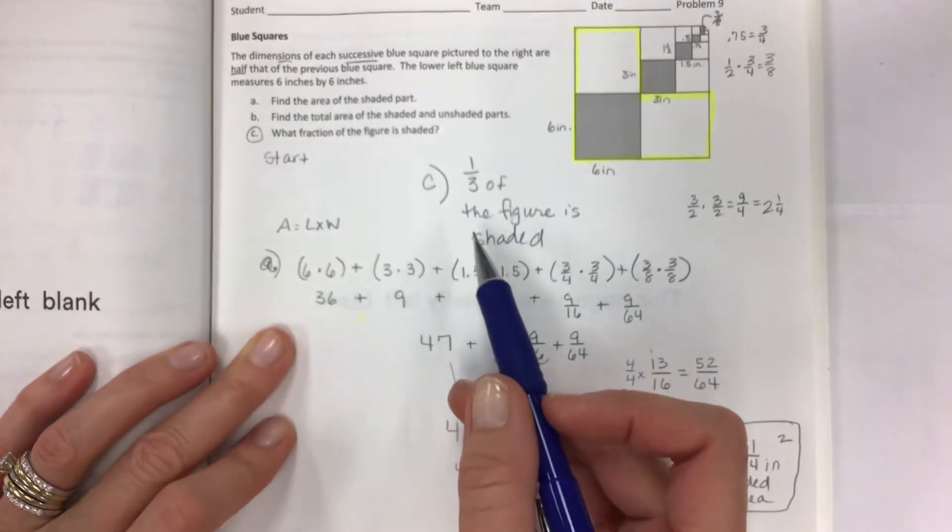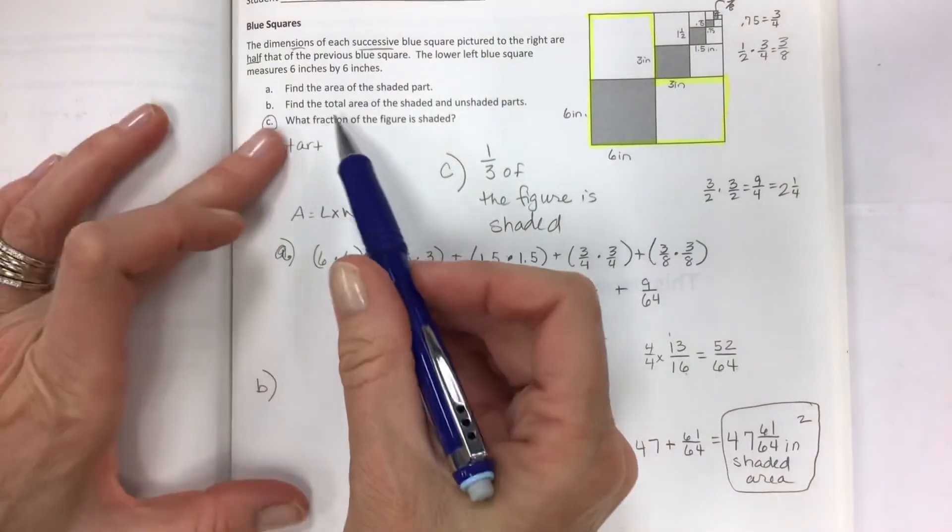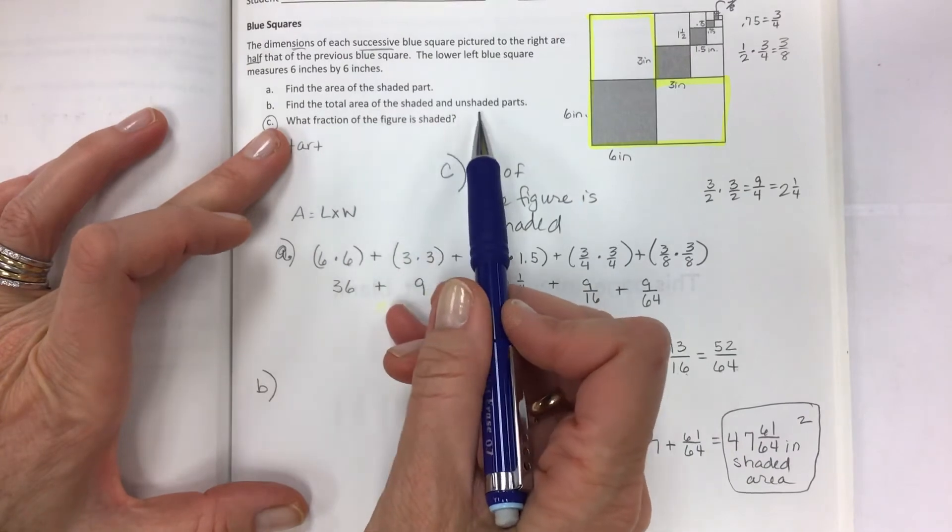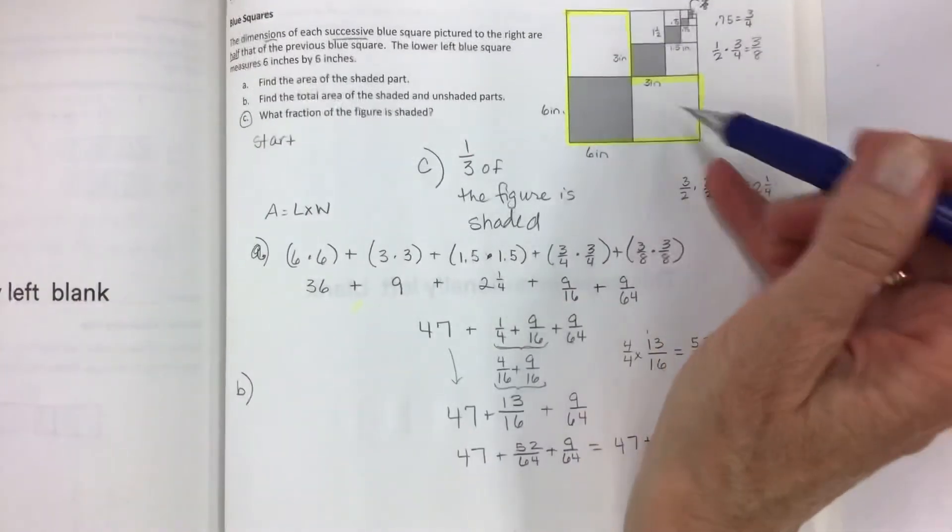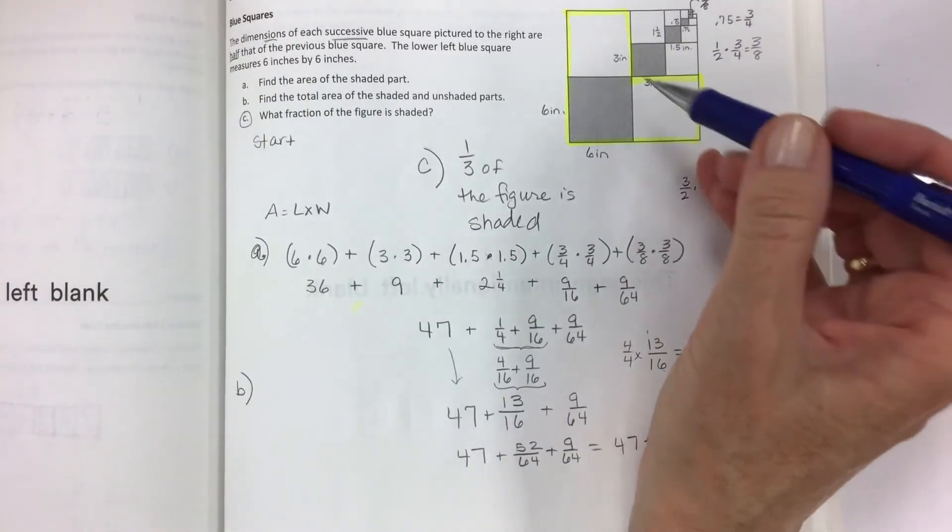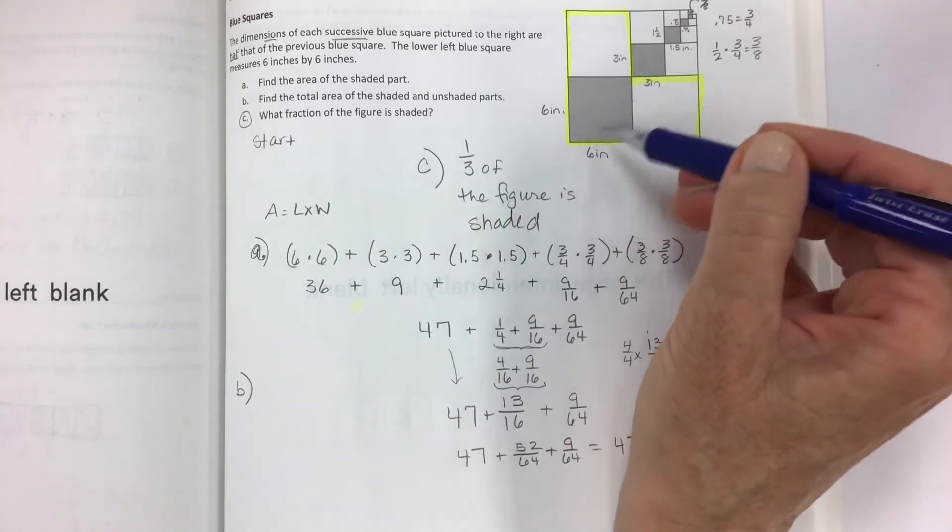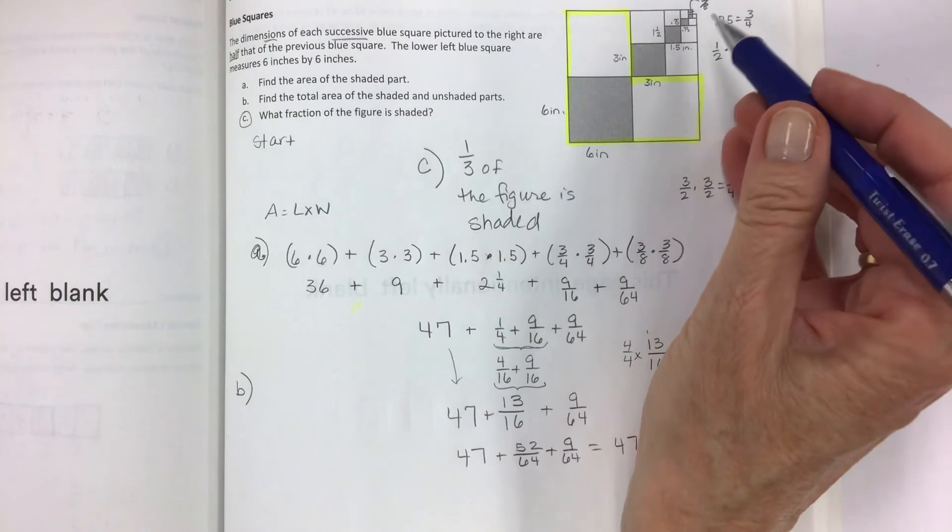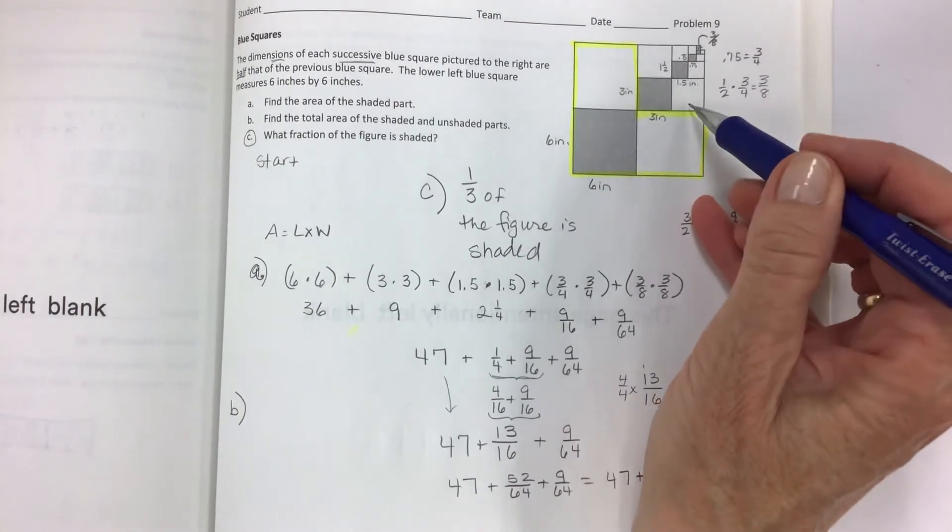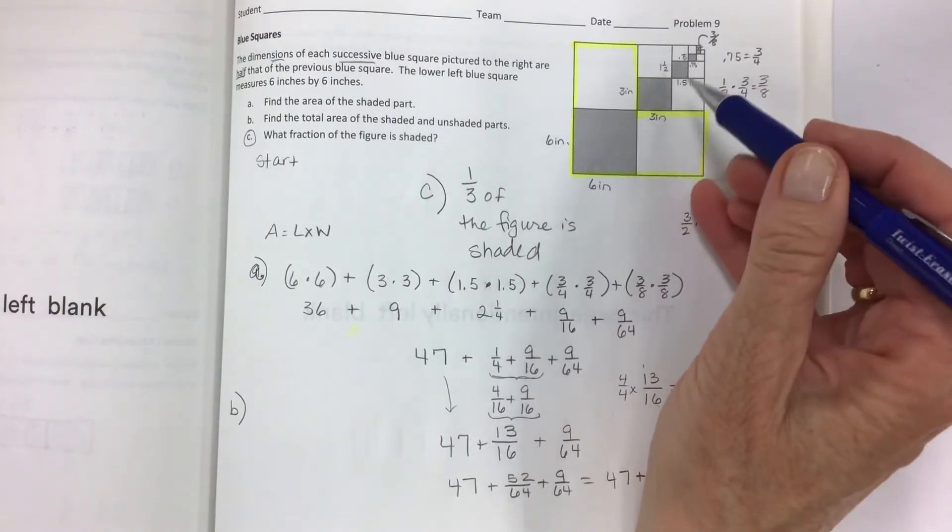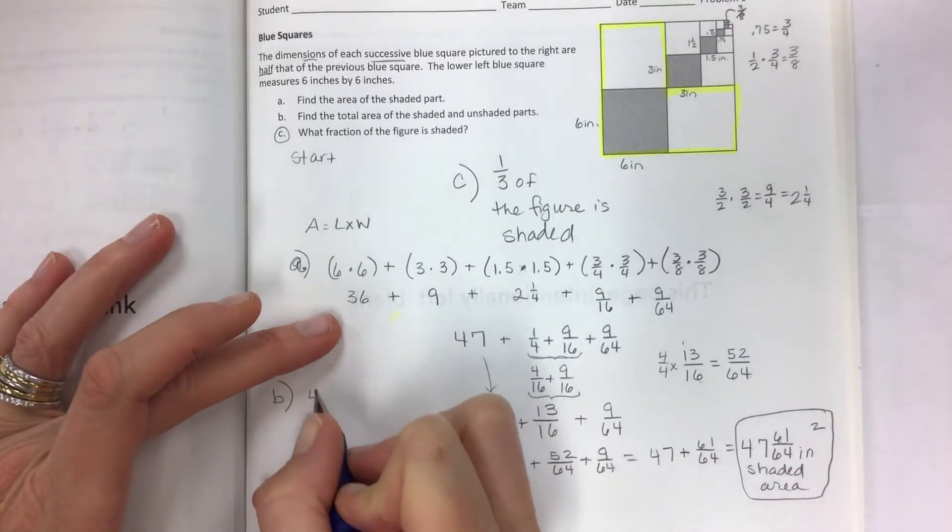So find the total area of the shaded and unshaded parts. So with our picture being what it is, it's not going to be multiplied by 4. You're going to multiply by 3. This is taken care of but everything we found out for this we need to multiply it by 3 because it has to be here and here and it also has to be here and here. It has to be here and here. So each one of these we found needs to be multiplied 3 times. So take your 47 and 61 sixty-fourths, we're going to multiply that by 3.